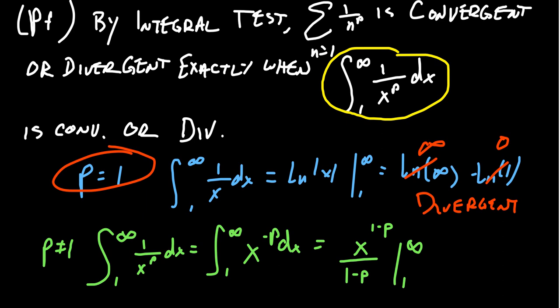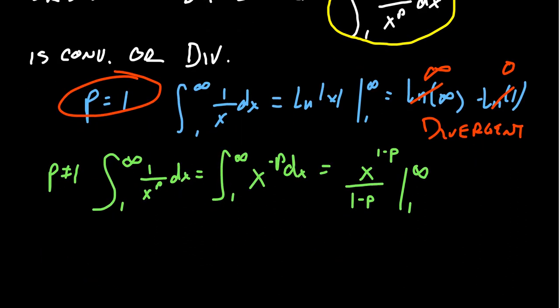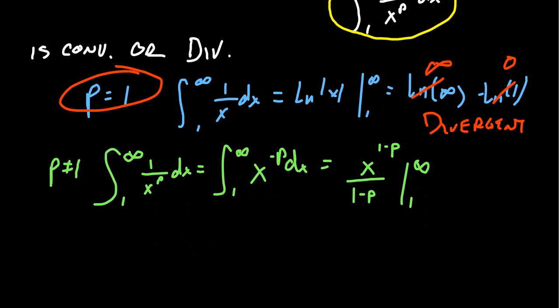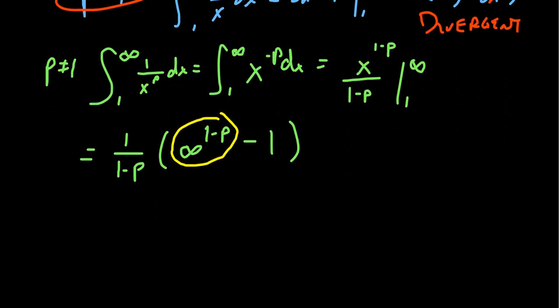Factoring out 1 minus p, we get infinity to the 1 minus p minus 1. We need to analyze infinity to the 1 minus p, because not all powers of infinity are infinite. This depends on whether we have a positive or negative exponent.